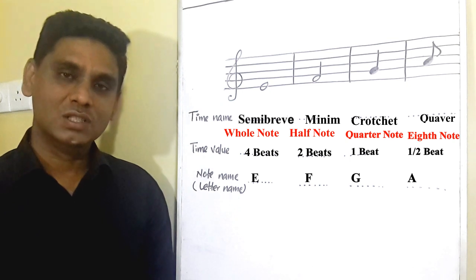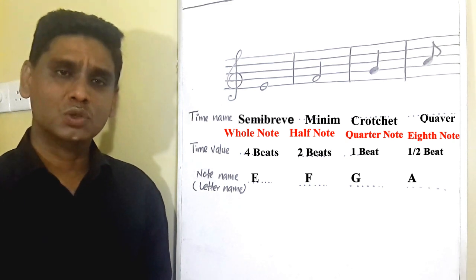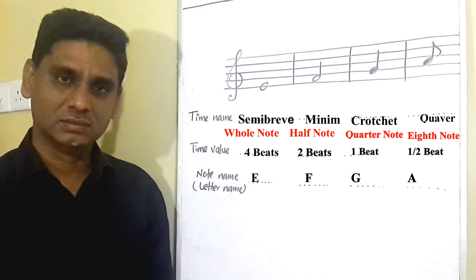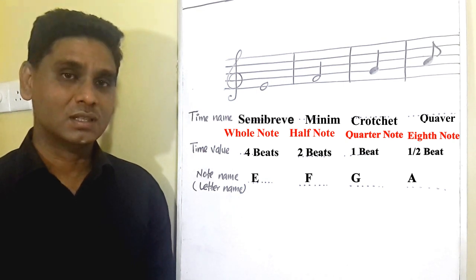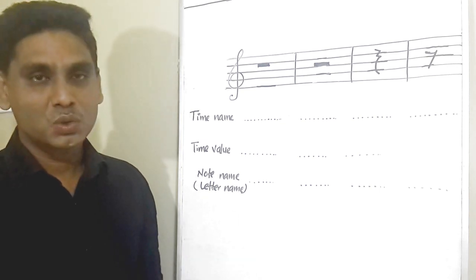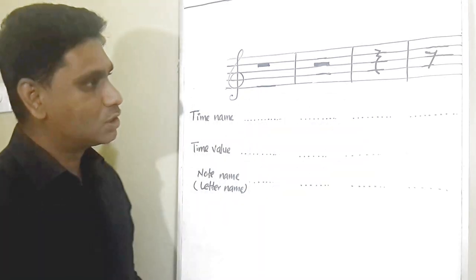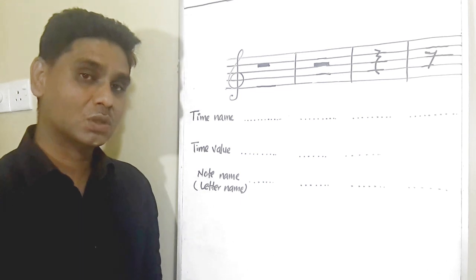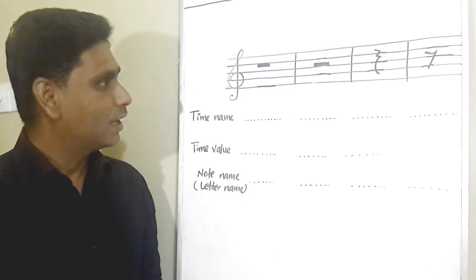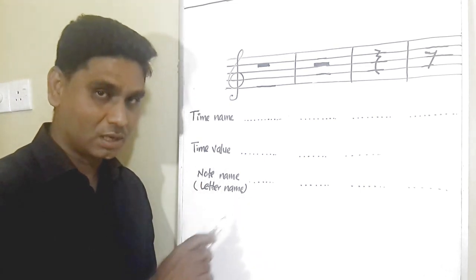I hope you really understood about time names, time values, and note names of the music notes. When reading the music notes, you must know these three things — otherwise it's quite difficult to read the music notes. I believe you understood the time name, time value, and the note name of a music note. Now let's move to a different set of symbols: music rests. Music rests are also presented by symbols. I have drawn a few symbols related to the previous music notes we have learned. Music rests also have time names, time values, and note names.